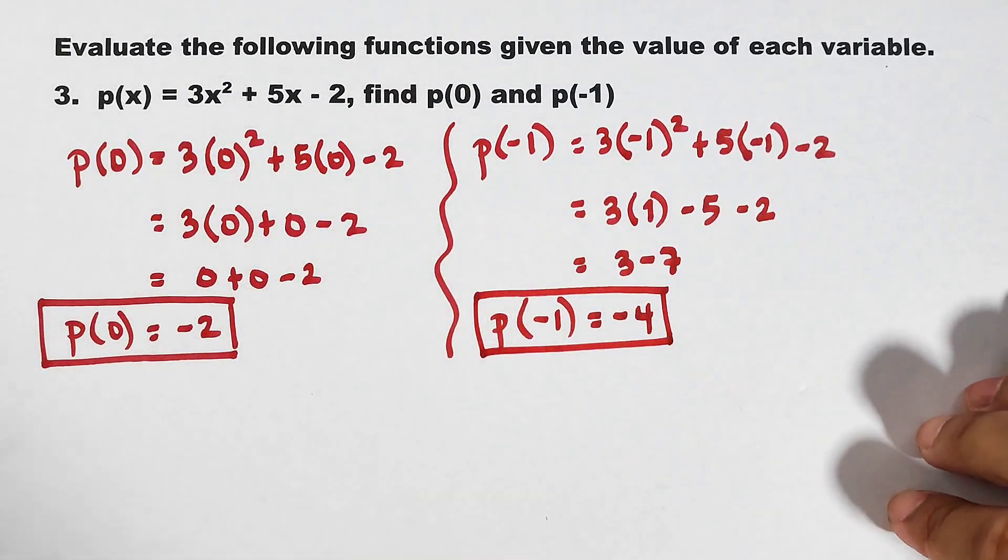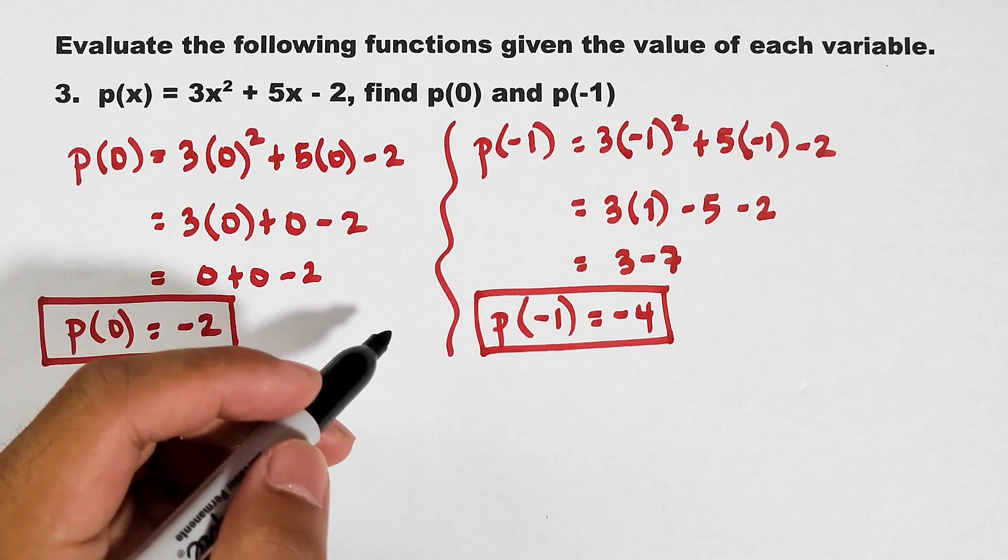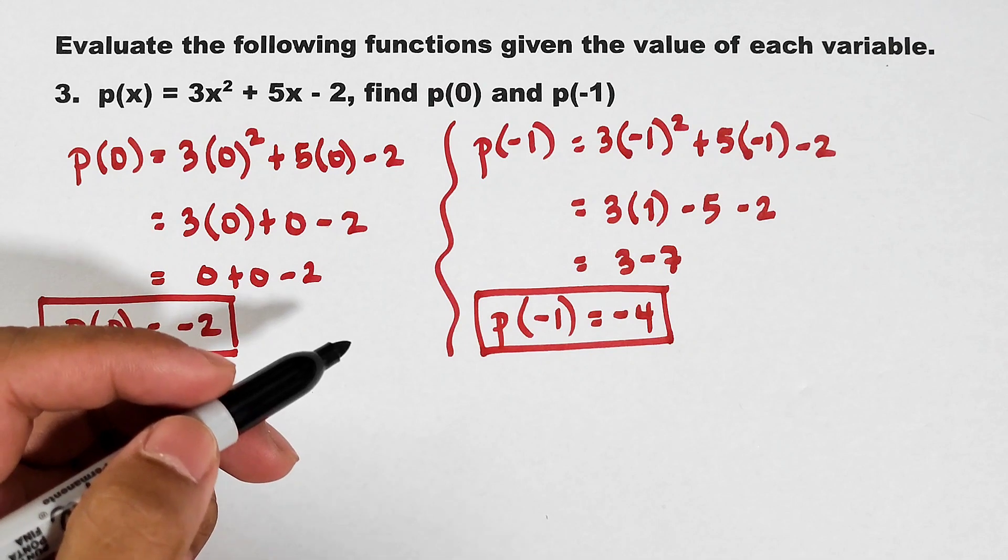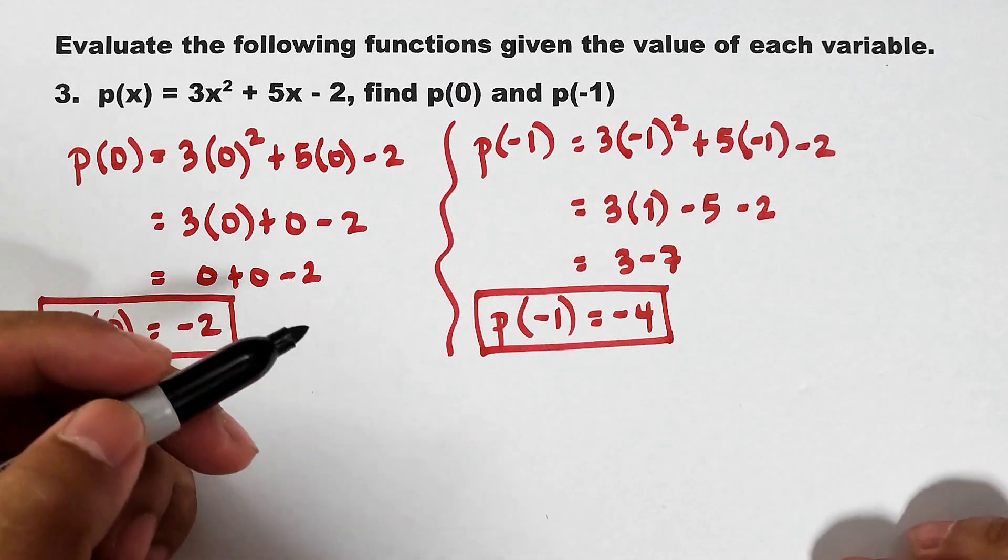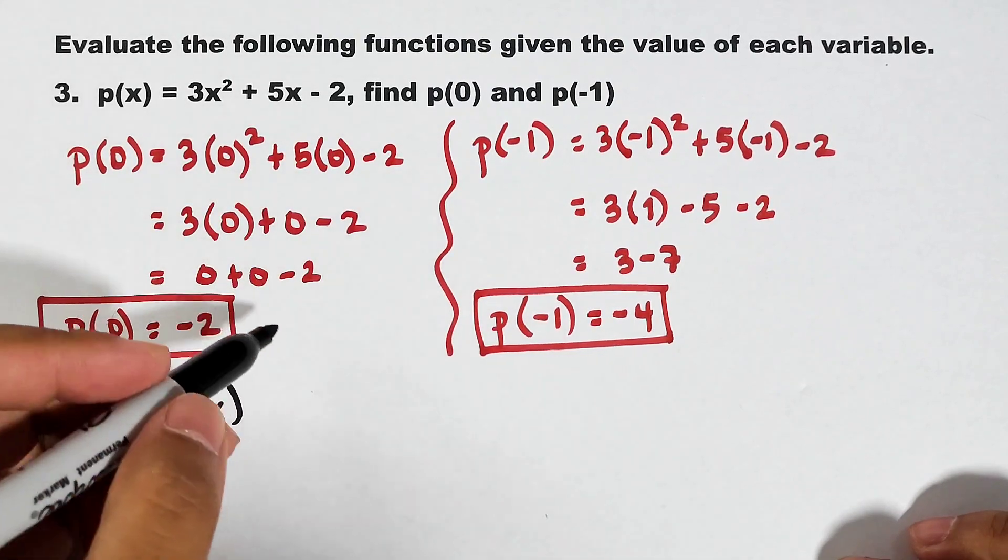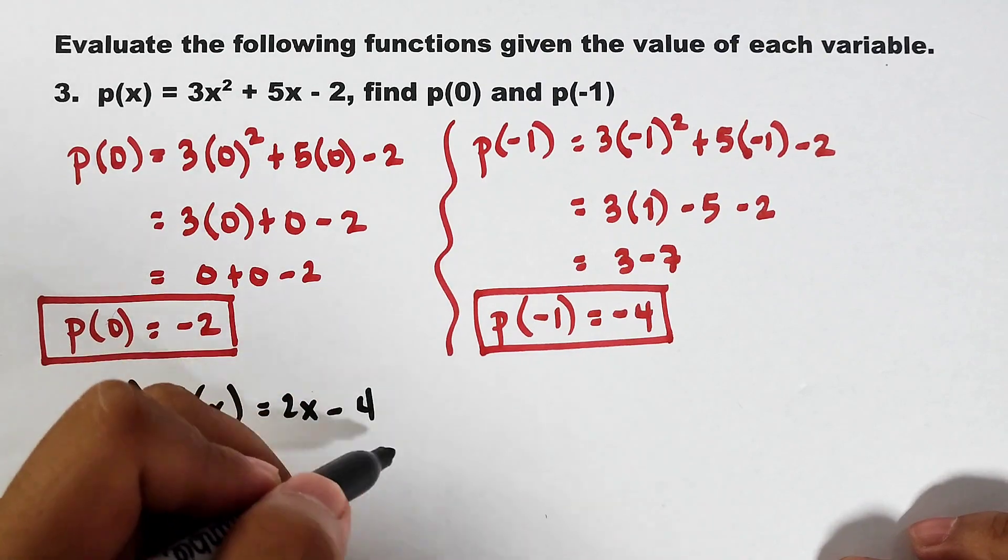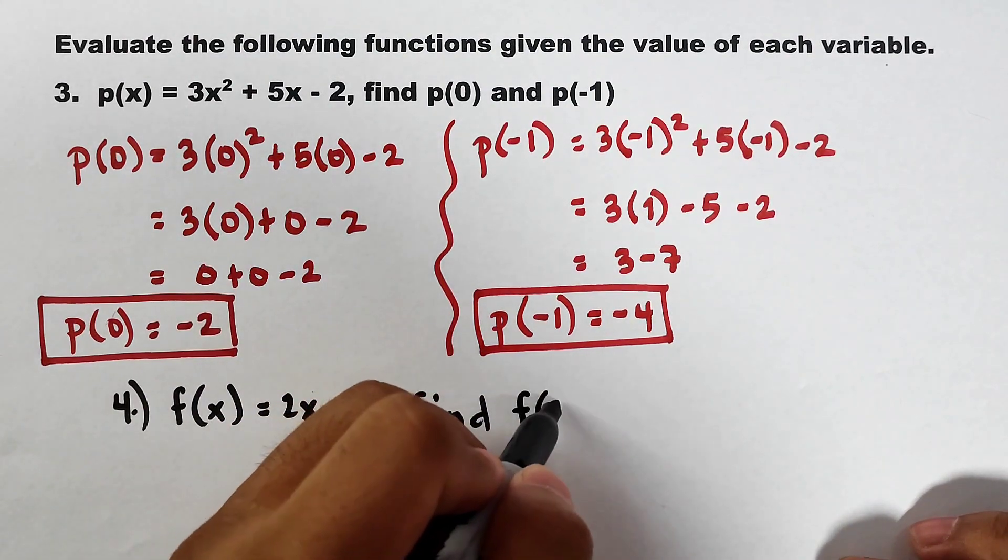So that's it guys. And as part of our routine, let me give you an activity about our topic evaluating function. Don't worry because I will give you a simple one. So let's try having this example. Wait for a while. Let me give you an example. Let's try number 4. f of x is equal to 2x minus 4 and find f of 3.